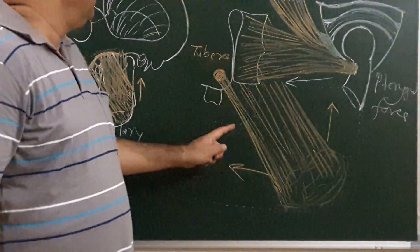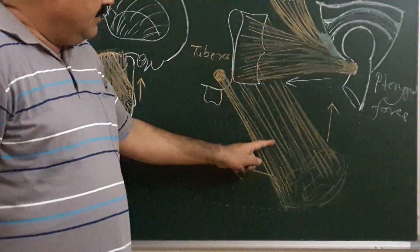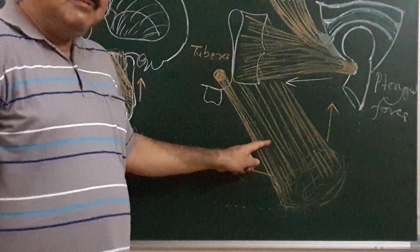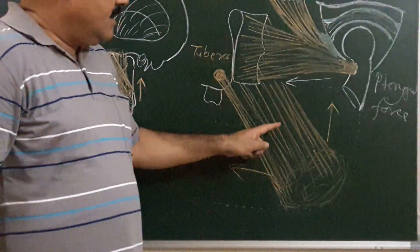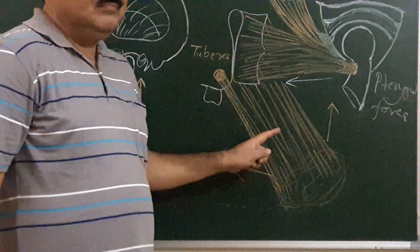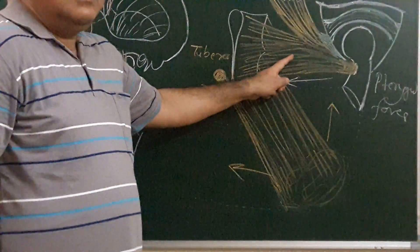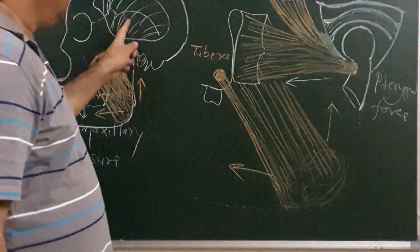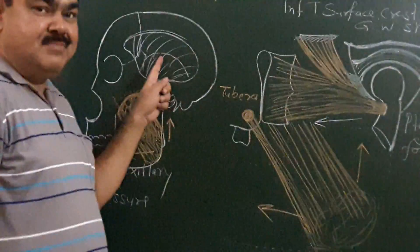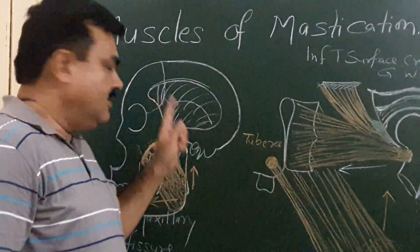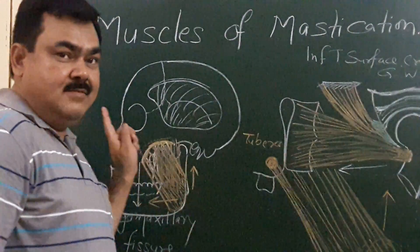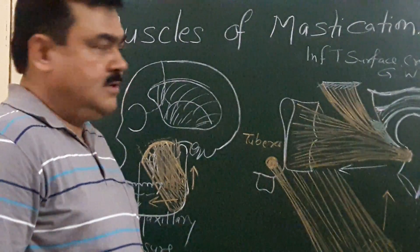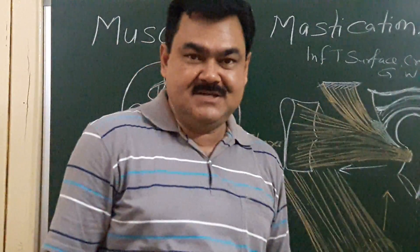The medial pterygoid is supplied by the nerve to medial pterygoid, which is a branch arising from the main trunk of the mandibular nerve. The lateral pterygoid is supplied by the nerve to lateral pterygoid, which is a branch of the anterior division of the mandibular nerve. The temporalis is supplied by the deep temporal nerves, and the masseter is supplied by the masseteric nerve — both branches of the anterior division of the mandibular nerve. This is all about the muscles of mastication.